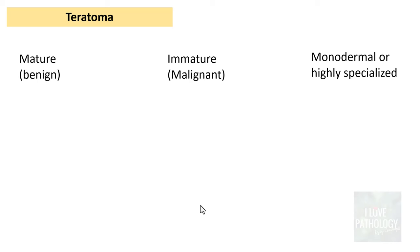The classification of teratoma is pretty simple. It is classified into mature teratoma, immature teratoma, and monodermal or highly specialized teratomas. The mature teratomas are the benign ones, immature teratomas are the malignant ones, and then there are monodermal or highly specialized teratomas.